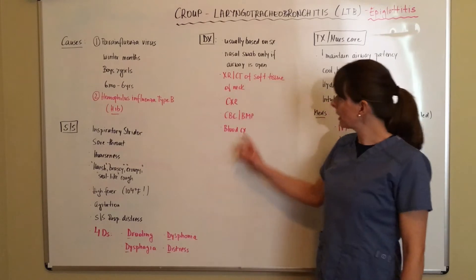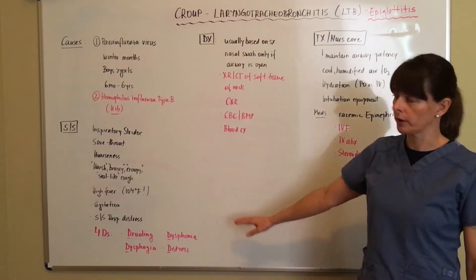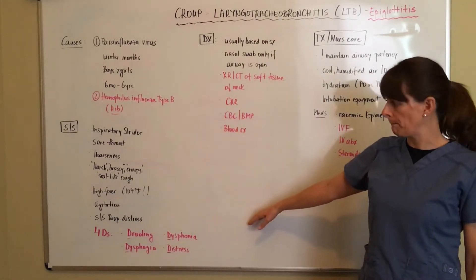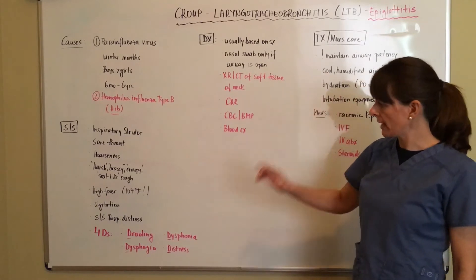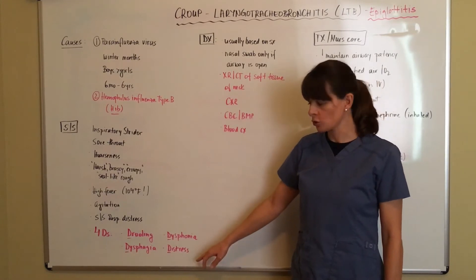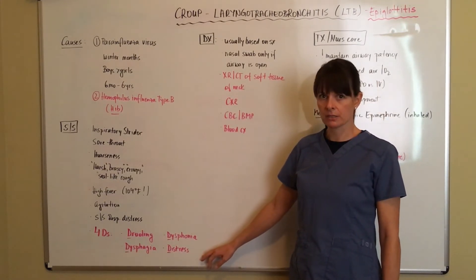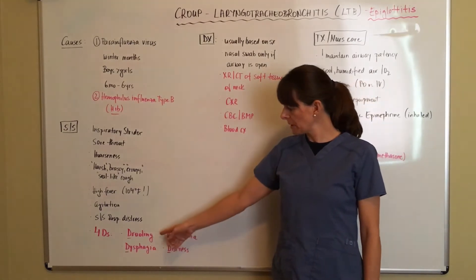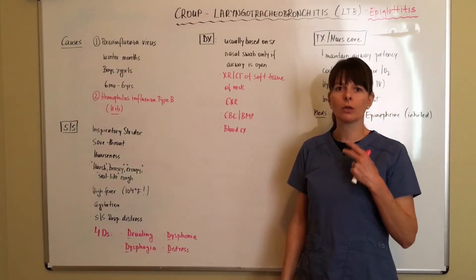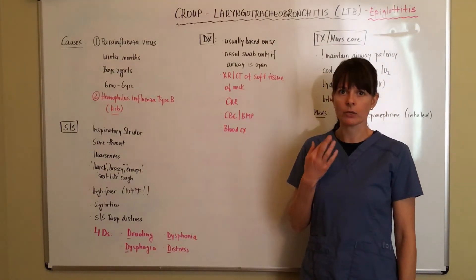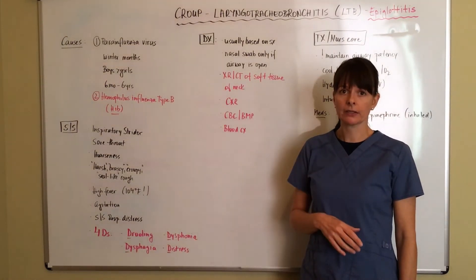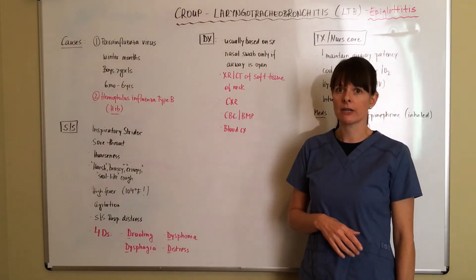For epiglottitis, the symptoms are color-coded separately. Epiglottitis has the four D's: drooling, dysphagia, dysphonia, and distress. These are more significant symptoms. The patient might be drooling because they are unable to handle their secretions — their airway is so swollen they cannot even swallow their own saliva. This is definitely a red flag requiring immediate intervention.